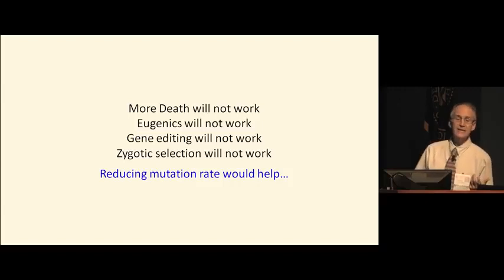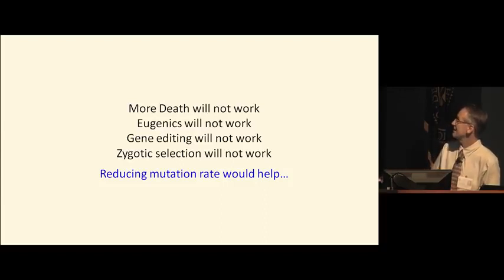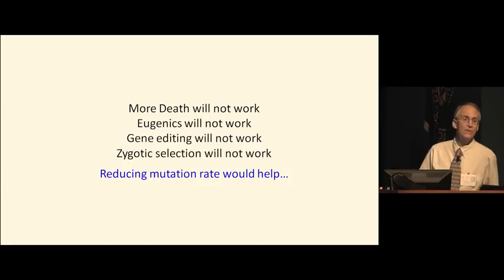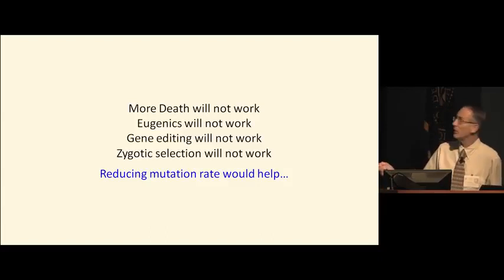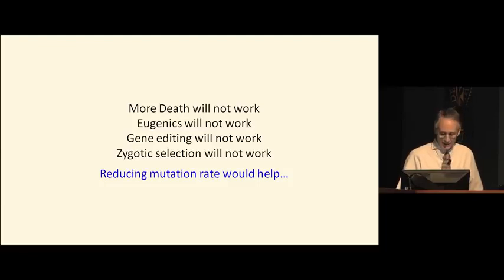We should strive toward reducing mutation rates. Lynch suggests in his papers that we just need more death — more juvenile death means more selection — but most juvenile death is due to bad circumstances, not fitness-based elimination, and increasing selection intensity in our simulations doesn't stop the problem. Eugenics won't solve it. Gene editing could fix one or two mutations in a few people, but it can't be applied to millions of mutations across a whole population. Reducing mutation rate would help, and I believe we should do everything we can to reduce both the genetic and epigenetic mutation rate.